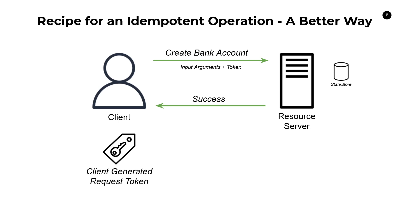Going back to the teller example: you click the button the first time, a token gets generated, the call is made, it succeeds. You click the button again to create a second account — it's a brand new API request not part of any previous retry. The resource server says, 'I don't have a copy of this token, I'm going to create another account.' That's how you get idempotency without inspecting input arguments, by putting the onus into the hands of the client.